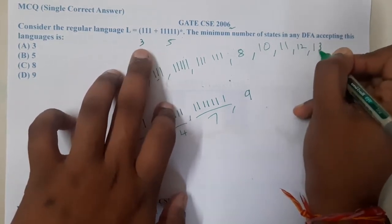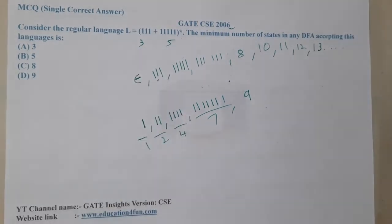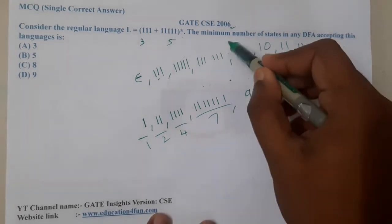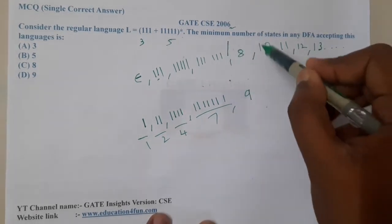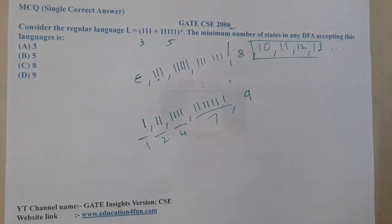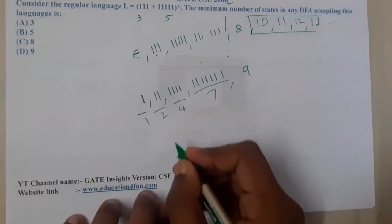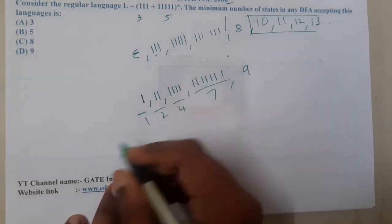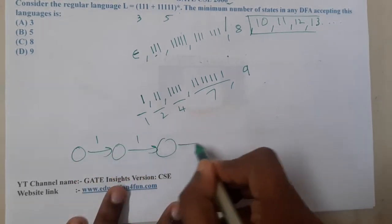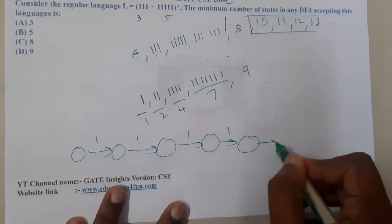Can I generate thirteen ones? Indirectly I think after thirteen everything can be generated. I think from ten everything is accepted. So let us start drawing the diagram. The only question is where it will accept.